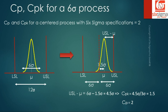When talking about process capability, there are two important factors: first, the process should operate within the specification limits; and second, we should check the proximity of the process mean to the specification mean. Therefore, CP alone, while a measure of process capability, may not depict the right picture. CPK accounts for the position of the process mean relative to the specification limits, making it a more complete measure.